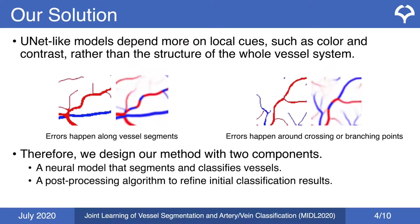In recent years, U-Net-like models have achieved state-of-the-art performance on vessel segmentation and classification. However, they depend on local cues such as color and contrast rather than the structure of the whole vessel system. Errors can be seen along single vessel segments and around vessel crossing points.